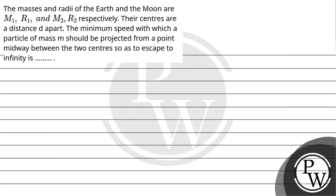Kinetic energy is half M v square, which will be equal to G M1 M by d by 2 plus G M2 M by d by 2.